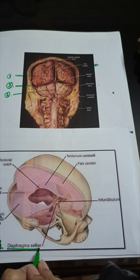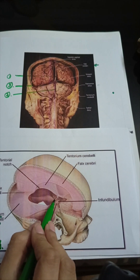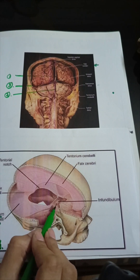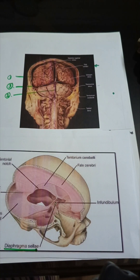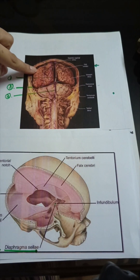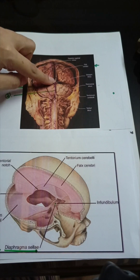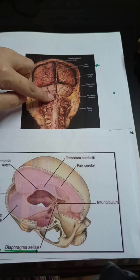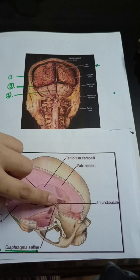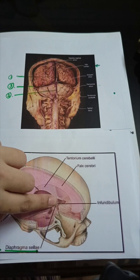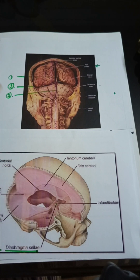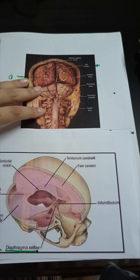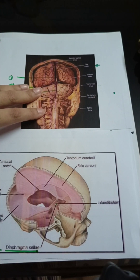The fourth septa of the meningeal layer is the diaphragma sellae, present over the hypophysial fossa. It has a small opening meant for the passage of the pituitary stalk. To enumerate, the septals of the meningeal layer of the dura at the level of the brain are: falx cerebri, falx cerebelli, tentorium cerebelli, and diaphragma sellae. These septations are important because they protect the brain and prevent unnecessary movements and rotations of important brain areas, especially during rapid acceleration and deceleration.